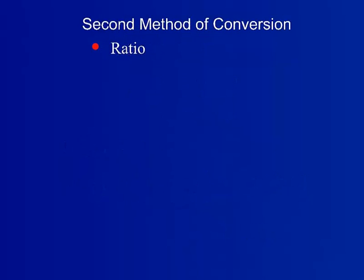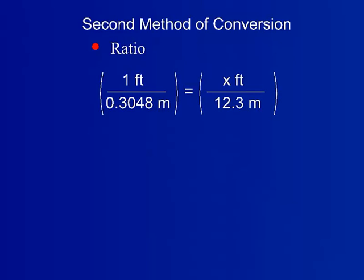Another method is the ratio method. To use this method, the ratio of the exact conversion is set equal to the ratio of the desired units over the known units. In many cases, the desired unit is labeled as a variable, such as x, for easier arithmetic.